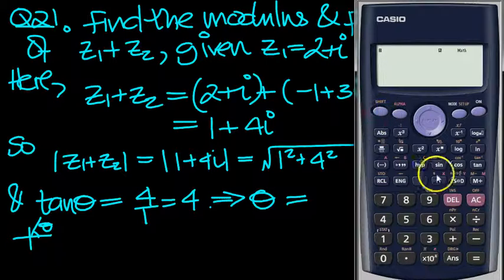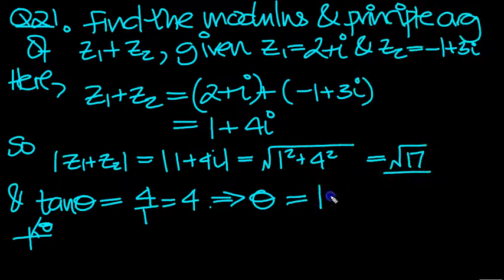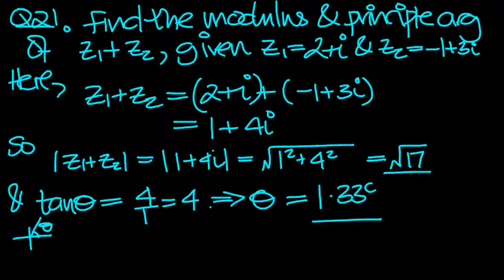So shift tan 4, isn't it? Shift tan 4. In radians mode. 1.33. So let's write that down to 2 decimal places then, 1.33 radians.